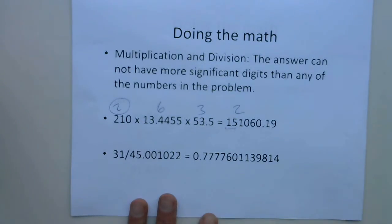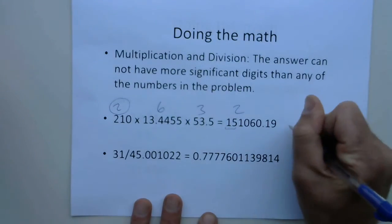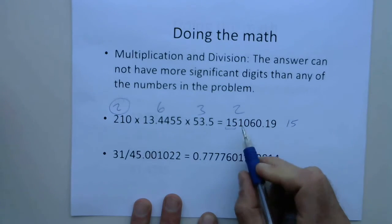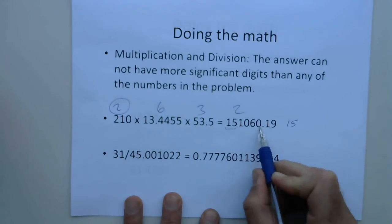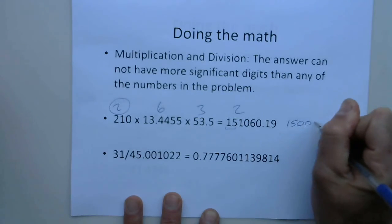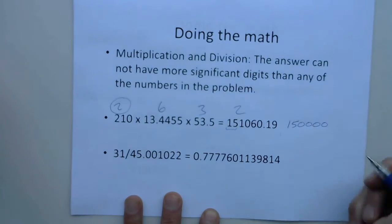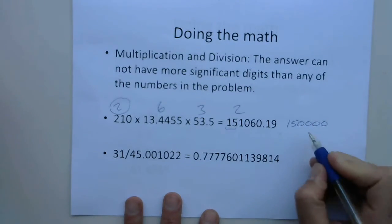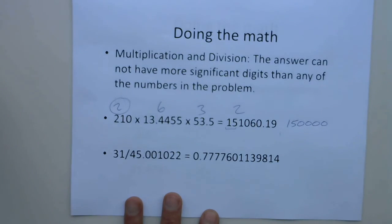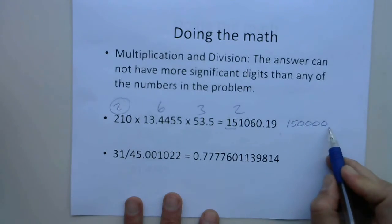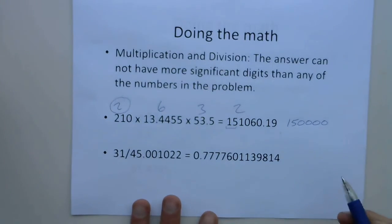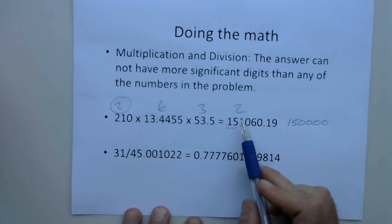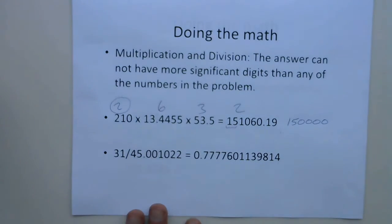So we want to round our answer to only two significant figures. We round to 1, 5 — the remaining digits are still important as placeholders — giving us 150,000. No decimal point there because those placeholder digits are not significant. We're rounding to two significant figures because that was the least precise measurement in our problem.